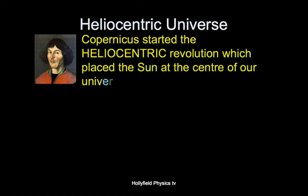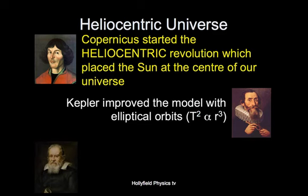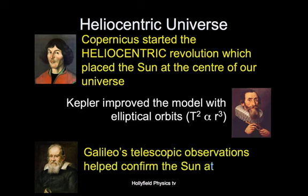First up, a little bit of history. Copernicus was the guy that started the idea of the heliocentric universe and placed our Sun at the centre. His model wasn't particularly great though — he had all of the planets going around in circular orbits. Kepler, a little while later, using the superb data of Tycho Brahe, improved on the model, bringing in elliptical orbits. If you remember Kepler's third law, which is T squared proportional to R cubed.